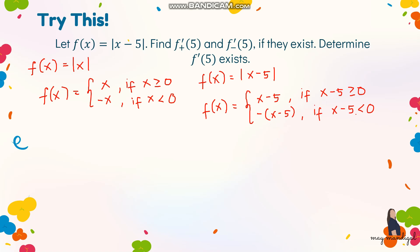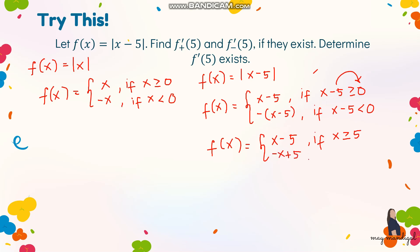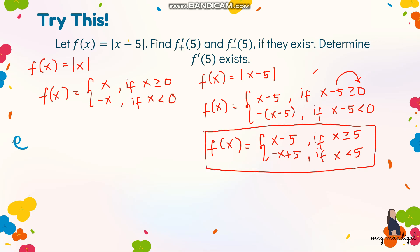Simplifying the piecewise function: we get x minus 5 if x is greater than or equal to 5, and negative x plus 5 if x is less than 5. We will use this to check whether the right and left hand derivatives exist.